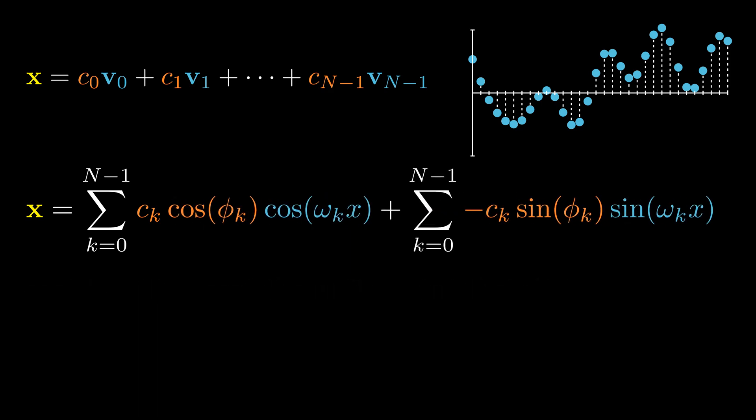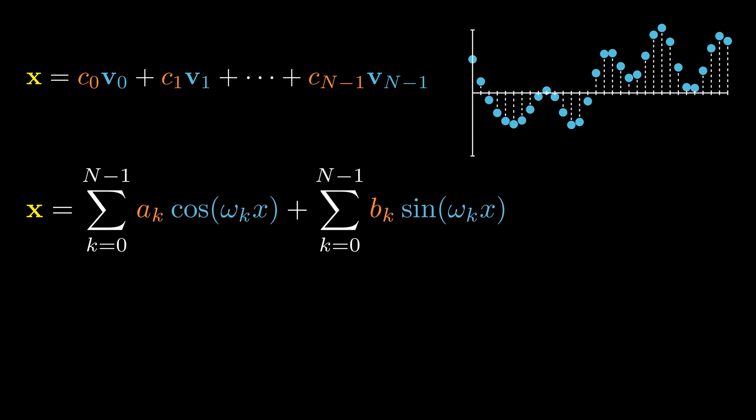Shuffling the terms around, we see that our signal x can be expressed as a linear combination of cosine and sine waves. These cosine and sine waves form an orthogonal basis that no longer depends on the data. Let's call these coefficients ak and bk.